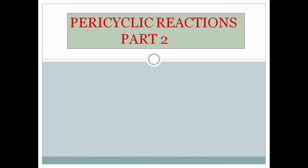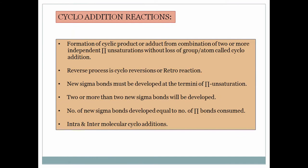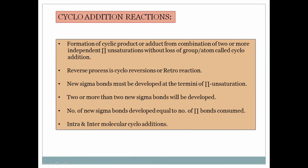Today I am going to discuss about pericyclic reactions and particularly about cycloaddition reactions. In cycloaddition reactions, an unsaturated molecule is combined with another unsaturated molecule to give an adduct. Due to consumption of two pi bonds, two sigma bonds are formed. Cycloaddition means a combination of two or more independent pi unsaturations without loss of any group or atom.